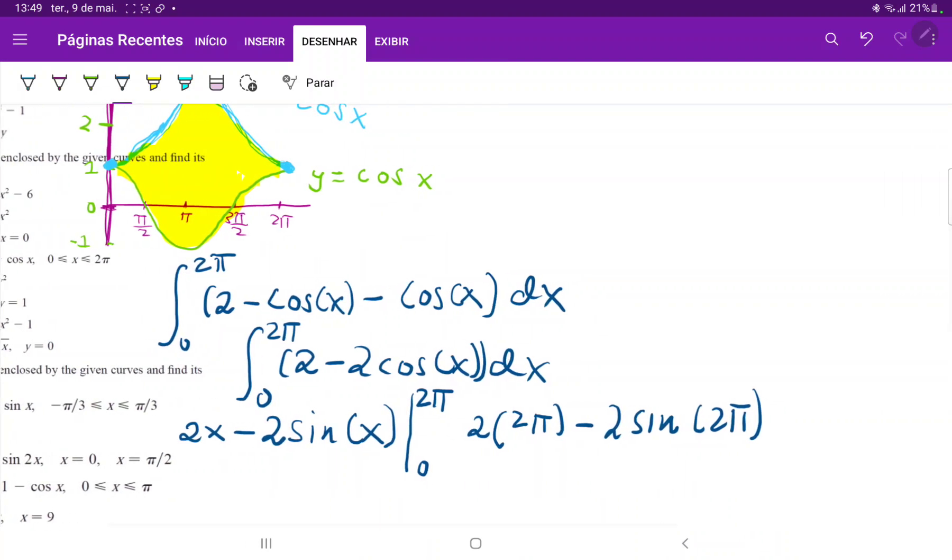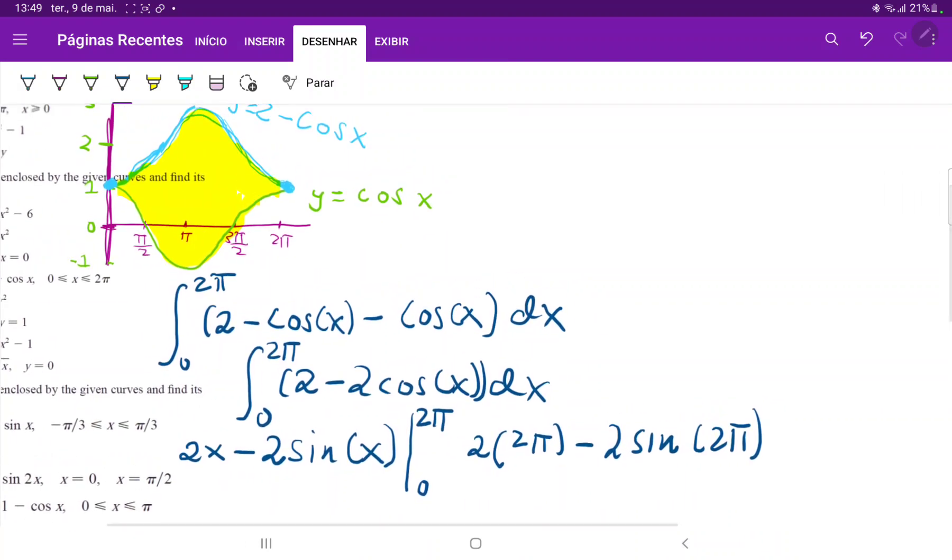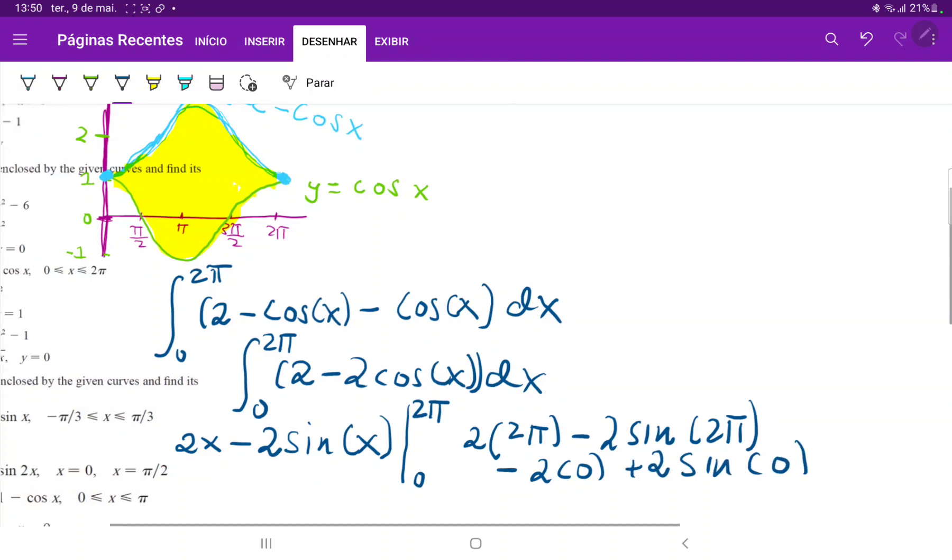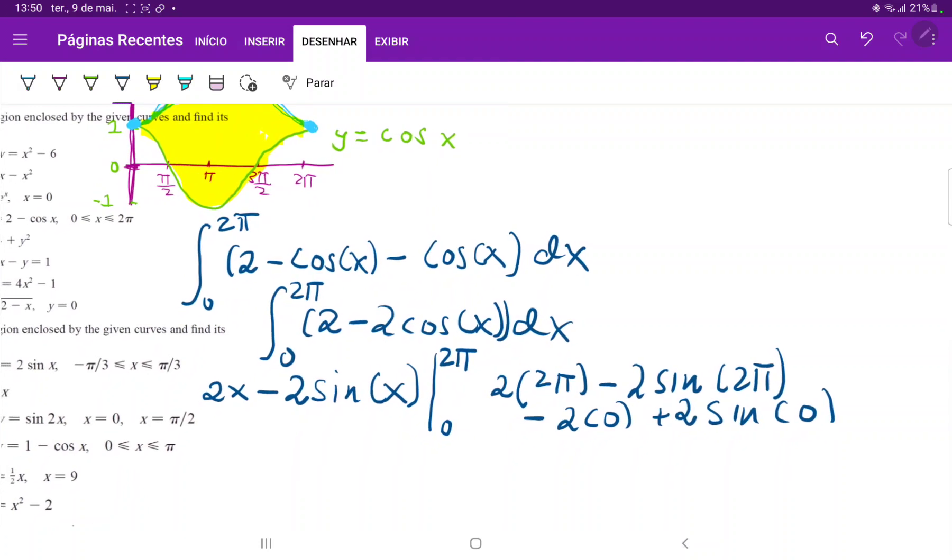And let's apply our lower boundary now. So, then this goes minus 2 times 0, and then minus minus 2, so plus 2 sine of 0. So, now we just need to calculate this.